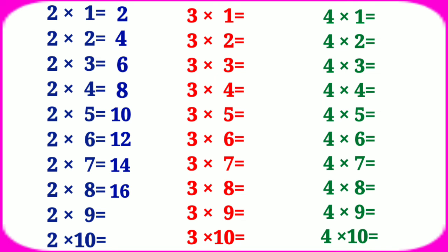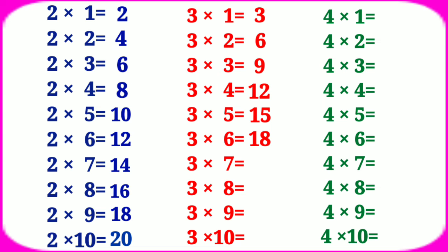2 nines are 18, 2 tens are 20. Table of 3: 3 ones are 3, 3 twos are 6, 3 threes are 9, 3 fours are 12, 3 fives are 15, 3 sixes are 18, 3 sevens are 21, 3 eights are 24, 3 nines are 27, 3 tens are 30.